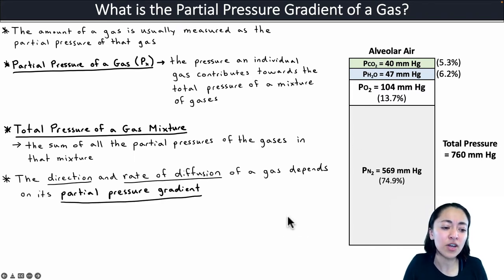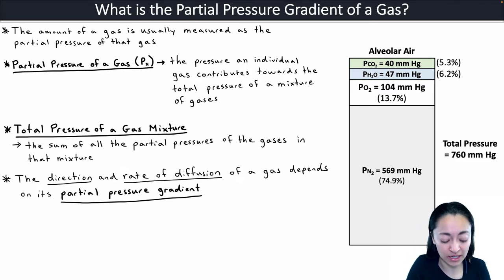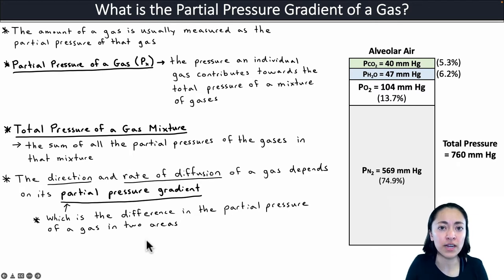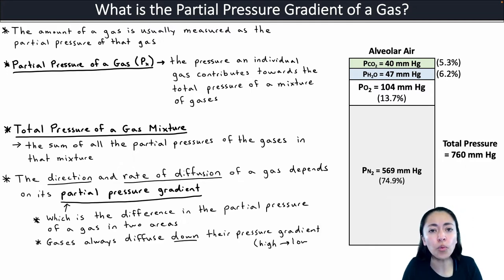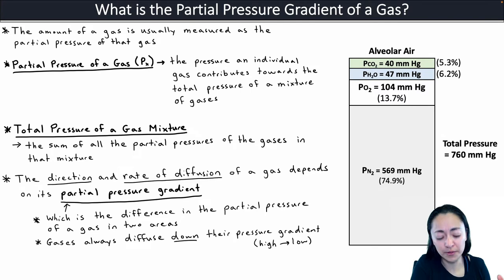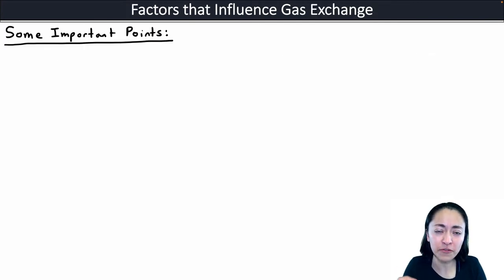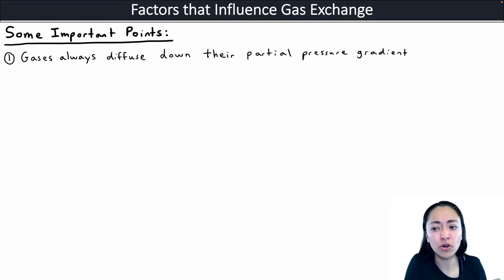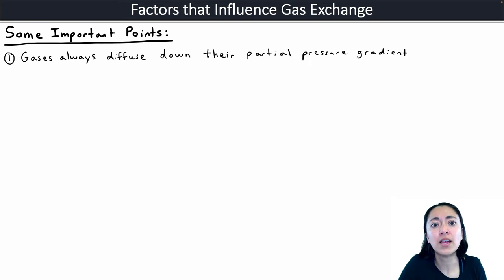The direction and rate of diffusion of a gas depends on its partial pressure gradient — the difference in partial pressure of a gas between two different areas. The greater the difference in partial pressure, the greater the rate of diffusion. Gases always diffuse down their pressure gradient, from an area of higher partial pressure to an area of lower partial pressure. This is why oxygen moves one way and carbon dioxide moves the other way during gas exchange.